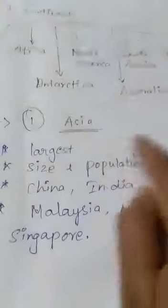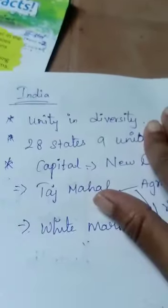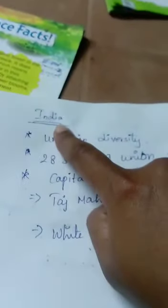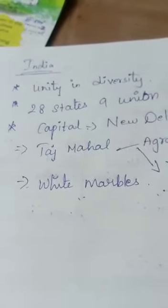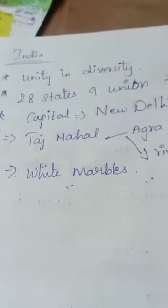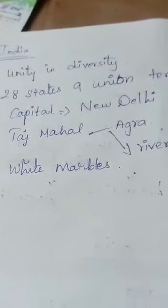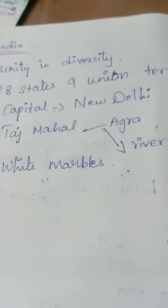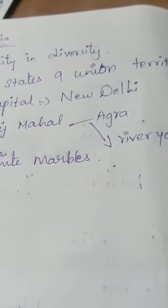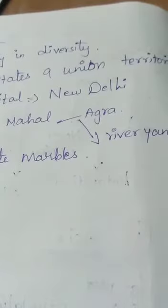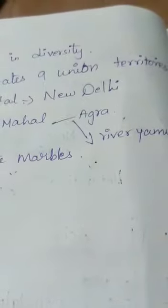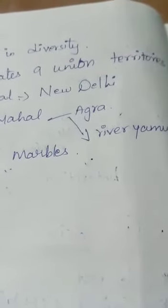In the Asia continent, the country we are all living in is India — we are all called Indian people, Indian citizens. India is called 'Unity in Diversity.' We call it that because a lot of people of different religions, languages, and cultures are living here. The language may be different, the culture may be different, the religion may be different, but we all live together in our country.